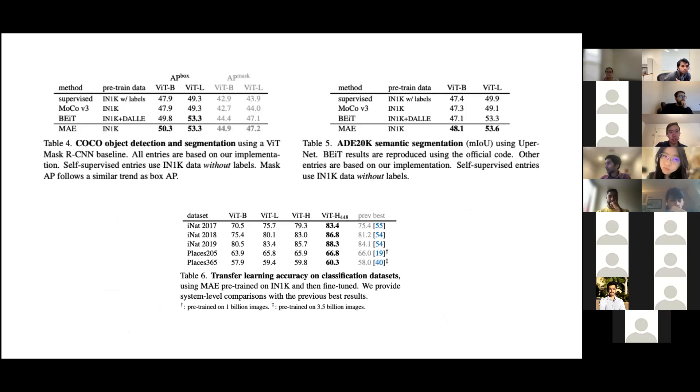These are some results using different downstream tasks such as object detection, semantic segmentation, or transfer learning on a different classification dataset. For object detection, we see the masked autoencoding method works very well. For semantic segmentation, we get similar results where it's beating previous methods. And for transfer learning, we see on the iNaturalist and Places datasets, it's also beating the previous best. All of those seem to be pretty good results.